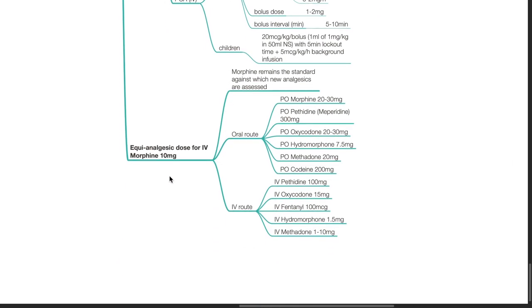Equianalgesic dose for IV morphine 10 mg. Morphine remains the standard against which new analgesics are assessed. IV morphine 10 mg is equivalent to oral morphine 20 to 30 mg, oral pethidine 300 mg, oral oxycodone 20 to 30 mg, oral hydromorphone 7.5 mg and oral codeine 200 mg. IV morphine 10 mg is equivalent to IV pethidine 100 mg, IV oxycodone 15 mg, IV fentanyl 100 mcg, IV hydromorphone 1.5 mg and IV methadone 1 to 10 mg.